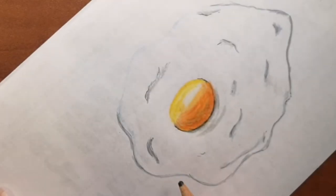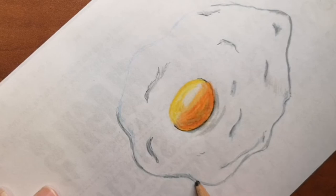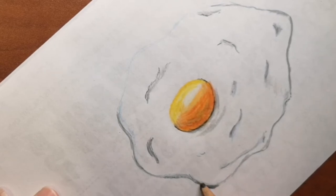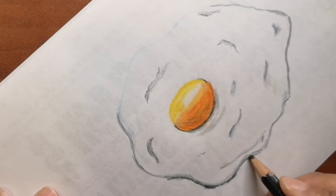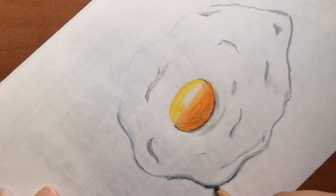I'm just adding in a few more details so that it kind of pops out of the page and shows like a real fried egg. Right now I'm adding in a little bit of shadow for the bottom part so that it stands out.